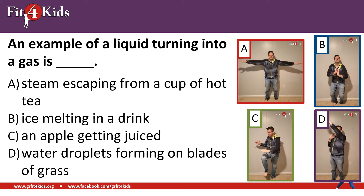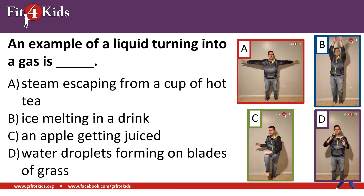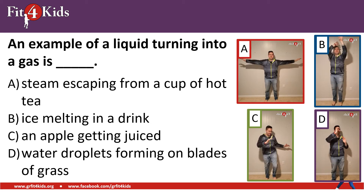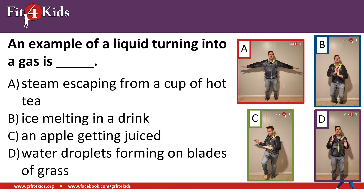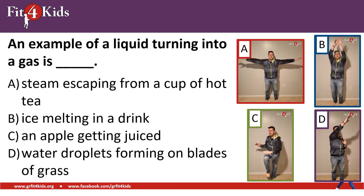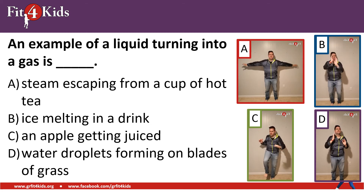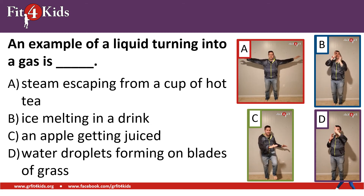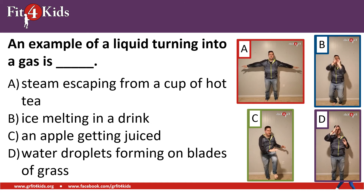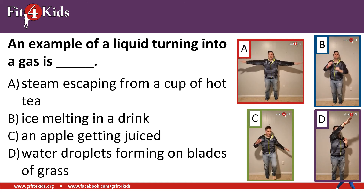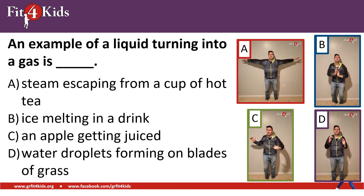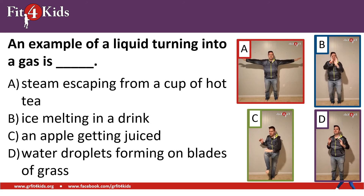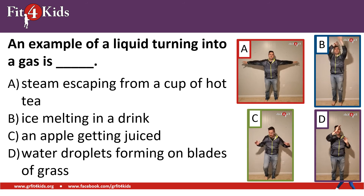An example of a liquid turning into a gas is blank. A, steam escaping from a cup of hot tea; B, ice melting in a drink; C, an apple getting juiced; D, water droplets forming on blades of grass. Your best answer is arm circles because steam escaping from a cup of hot tea is a liquid turning into a gas, or evaporating.